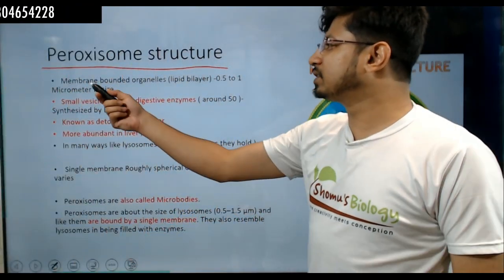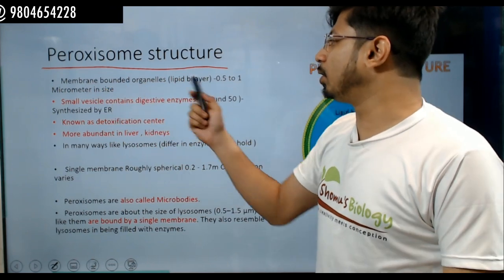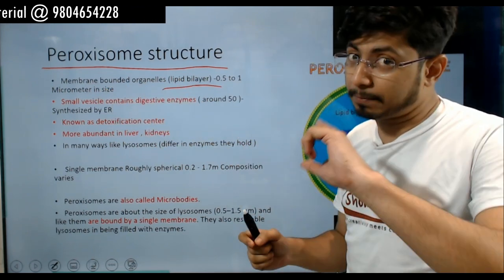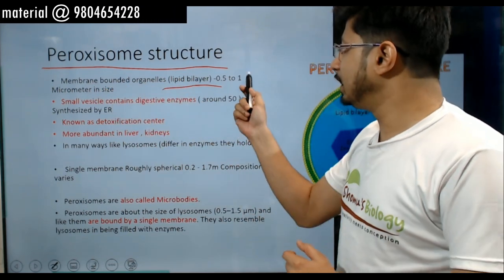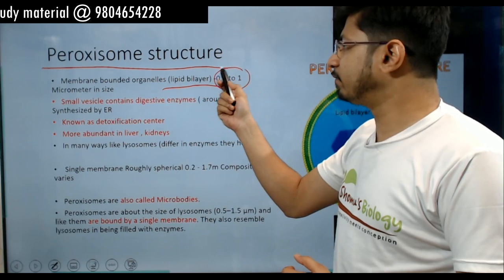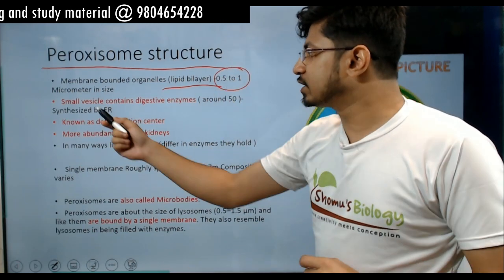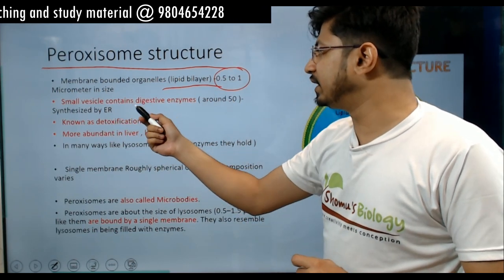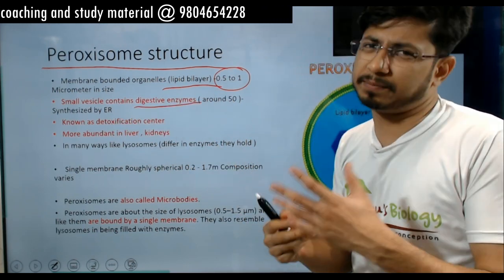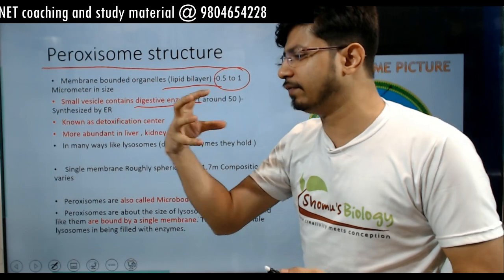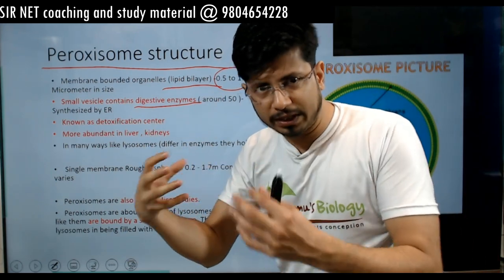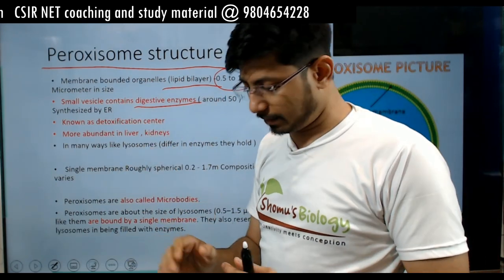Paroxysome is a membrane-bound organelle. It has a lipid bilayer-bound organelle, 0.5 to 1 micrometer in size — a small vesicle containing digestive enzymes. Basically, it's a vesicle filled with digestive enzymes.